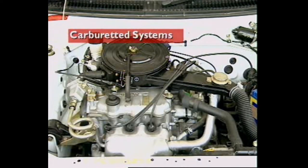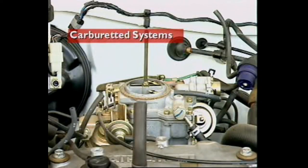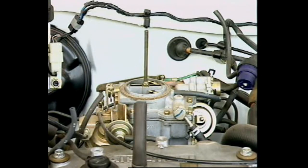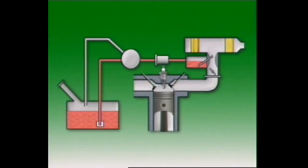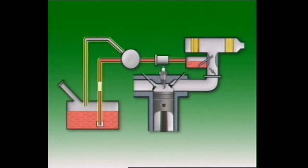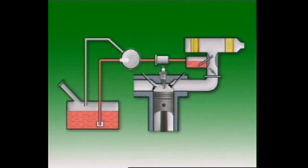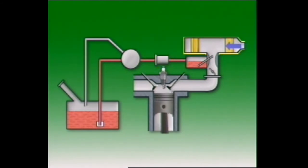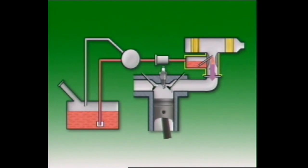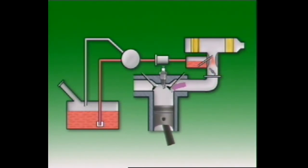This section examines a basic carburettor system. A basic carburettor system consists of the fuel tank to store the fuel, fuel lines or pipes to carry fuel in the system, a pump to transfer fuel from the tank to the engine, a filter to clean the fuel, an air cleaner to supply clean air, a carburettor to atomize the fuel and provide the correct mixture of air and fuel, and the engine intake manifold to deliver the air-fuel mixture to the engine.